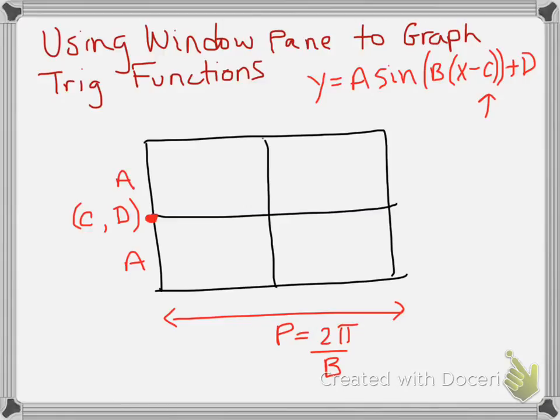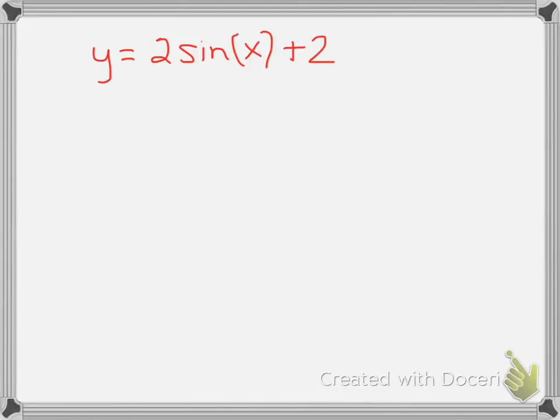The trickiest part is just making sure that you label your period correctly with the right intervals. So let's look at an example and see how it works. The first thing I need to be able to do in any equation is identify my a, b, c, and d values to identify those certain parameters.